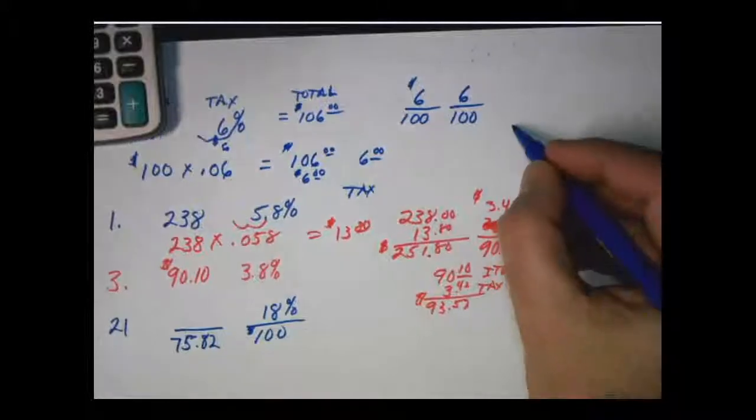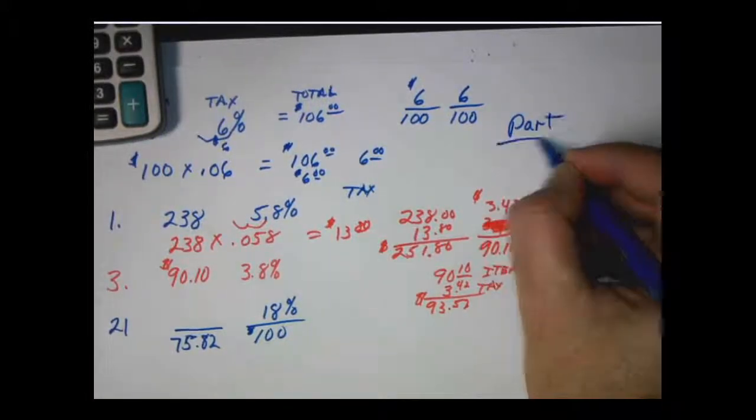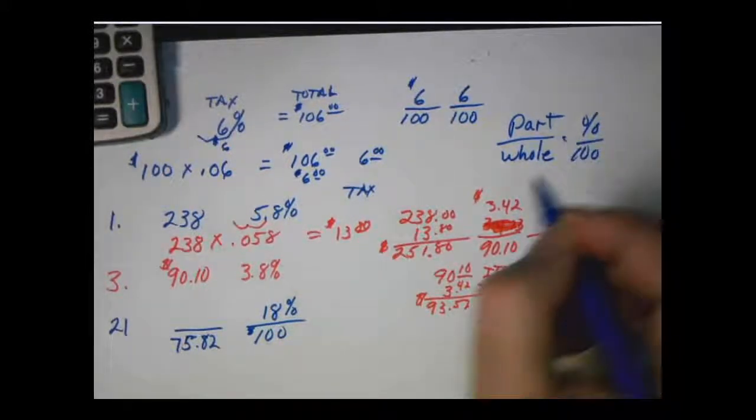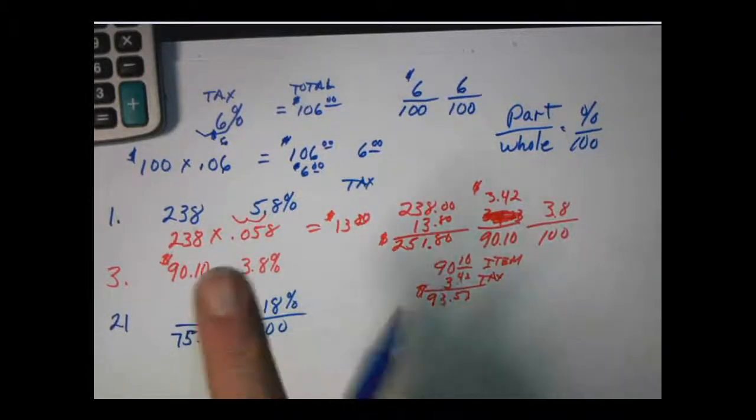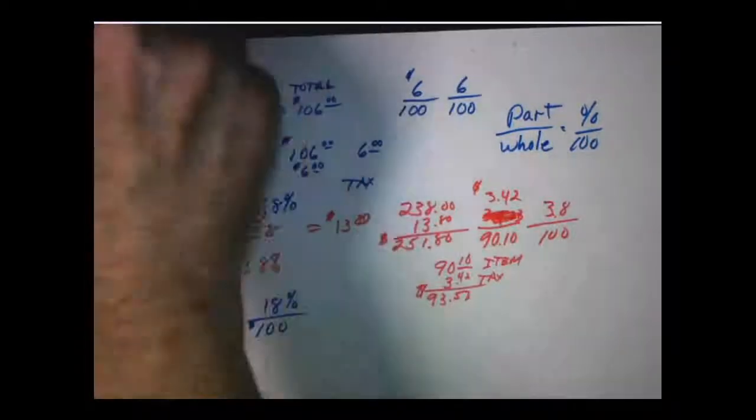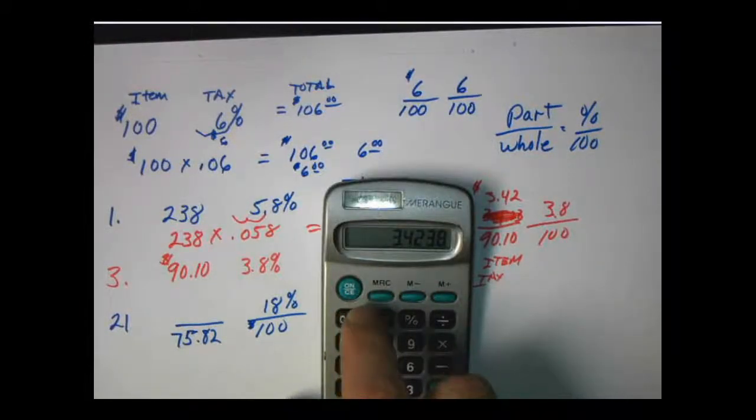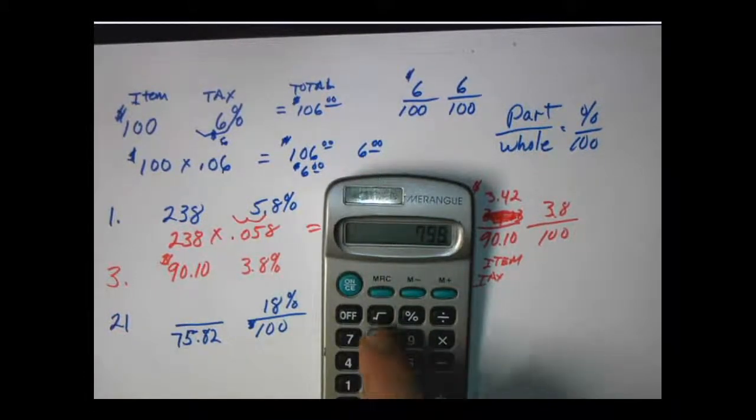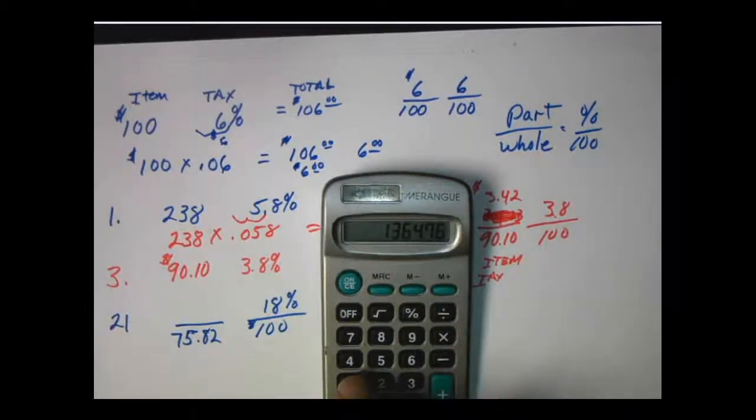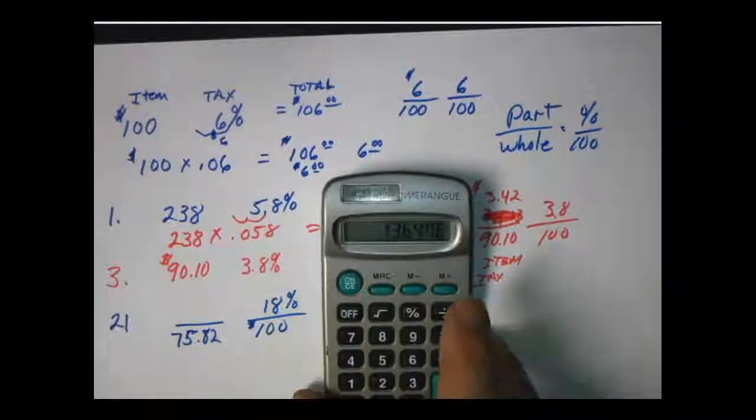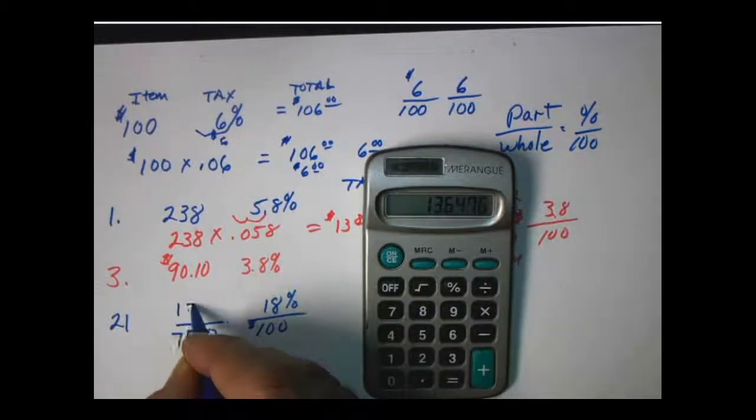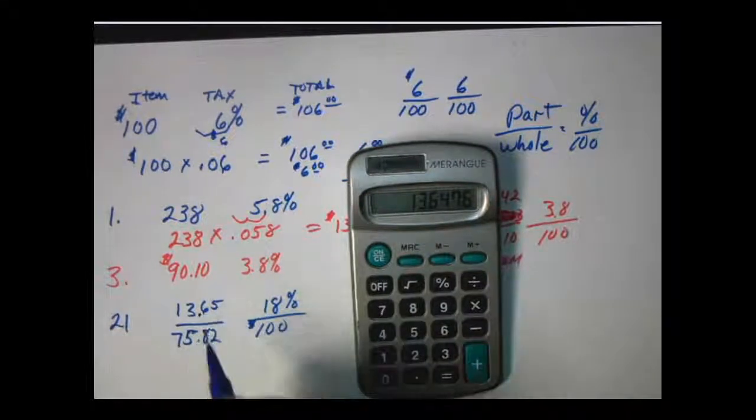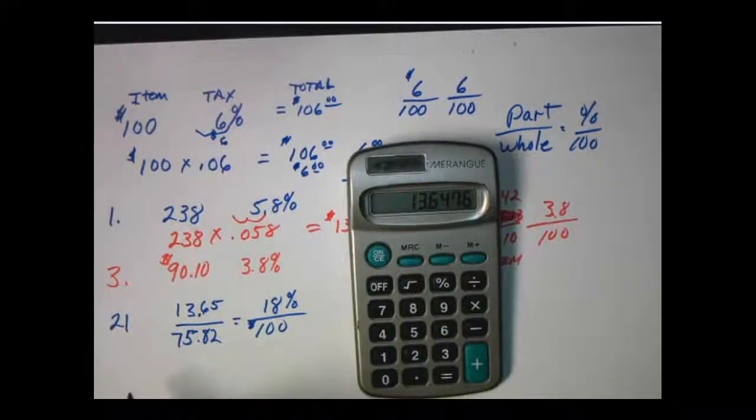So this is going to be that part out of the whole again. And we've talked about that for story problems. Percent over 100. So part out of the whole. So we're going to cross multiply divide. Bring back in our calculator here. So we have 18 times 75.82 equals divide by 100. $13.64. So we're going to save $13.60. We'll probably actually round up on that price. $13.65. Round to the nearest penny.